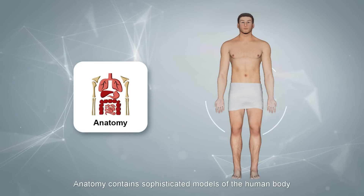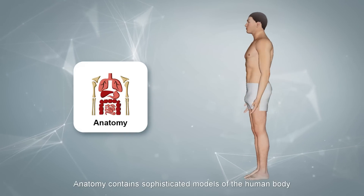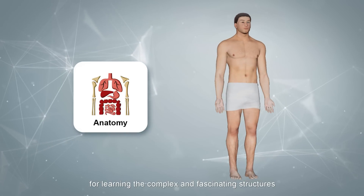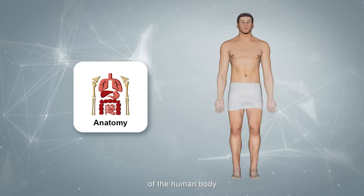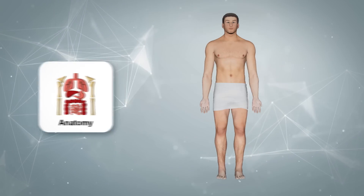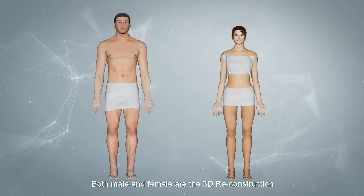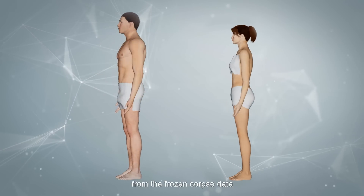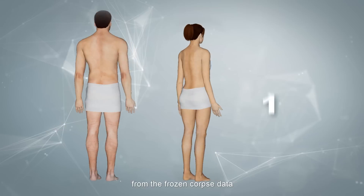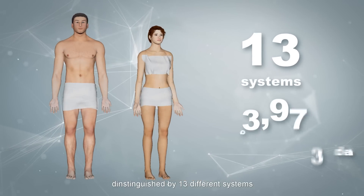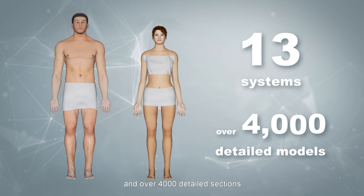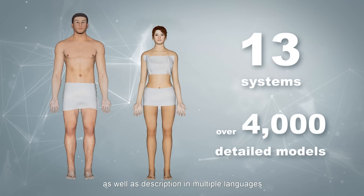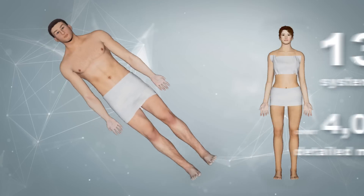Anatomy contains sophisticated models of the human body for learning the complex and fascinating structures of the human body. Both male and female are 3D reconstructions from frozen corpse data, distinguished by 13 different systems and over 4,000 detailed sections, as well as descriptions in multiple languages.